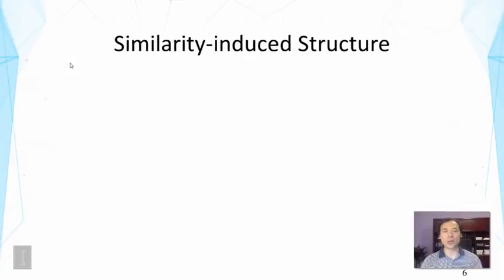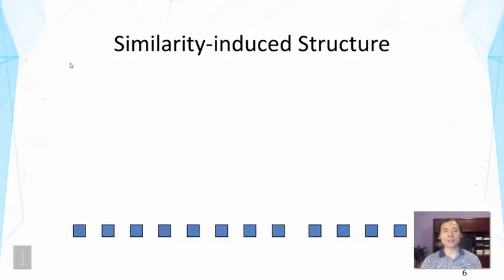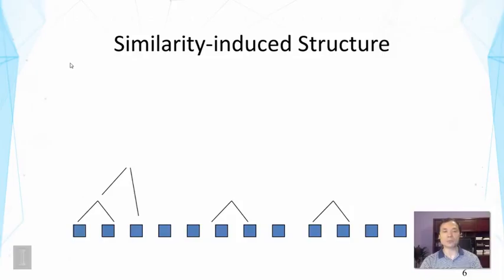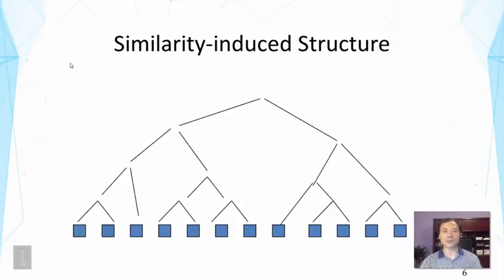To illustrate how we induce structure based on similarity: we start with all the text objects, measure the similarity between them based on the provided similarity function, and find which pair has the highest similarity — then group them together. We continue picking the next highest similarity pair to group. Every time we pick the highest similarity pairs to group, this eventually gives us a binary tree grouping everything together.